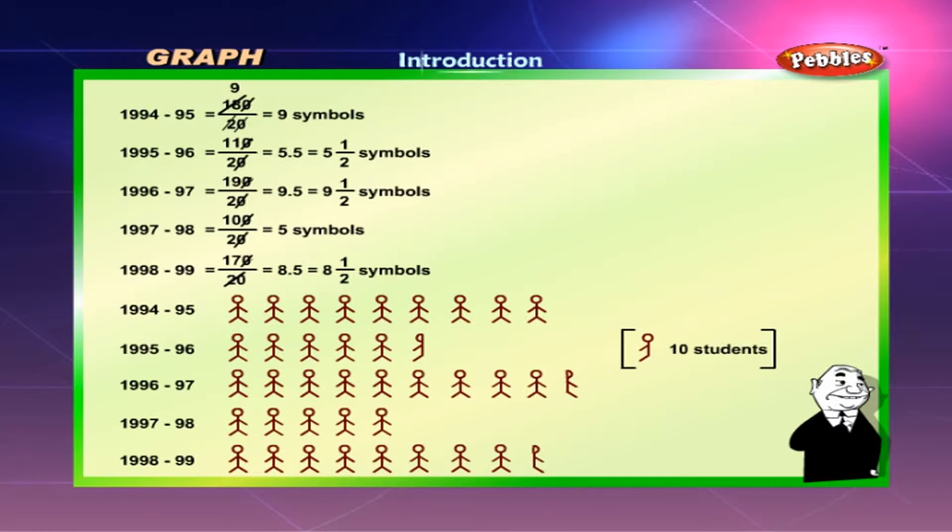The number of students enrolled in the year 1996-97 is represented by 9 and a half symbols. The number of students enrolled in the year 1997-98 is represented by 5 symbols. The number of students enrolled in the year 1998-99 is represented by 8 and a half symbols.